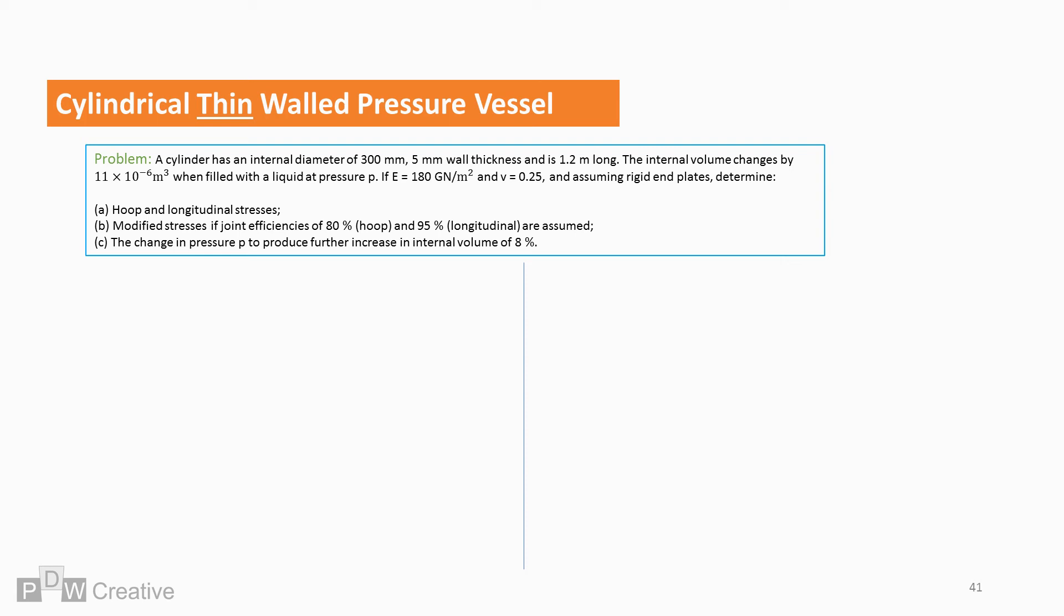let's determine the following. So A, hoop and longitudinal stresses. B, the modified stresses if joint efficiencies of 80% for hoop stress and 95% at longitudinal stresses are assumed. And C, the change in pressure P to produce further increase in internal volume of 8%.